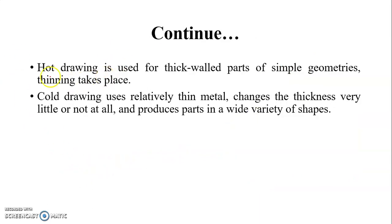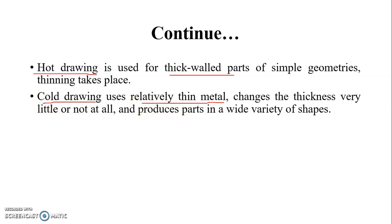Hot drawing is used for thick wall parts of simple geometry where thinning takes place. If we want a thick wall product, we have to use hot drawing operation, which is a hot working operation. And if we want relatively thin metal, we have to use the cold working operation. I had discussed hot working and cold working in the previous lectures.